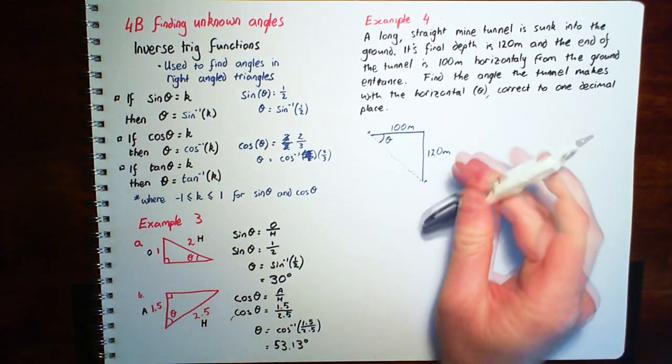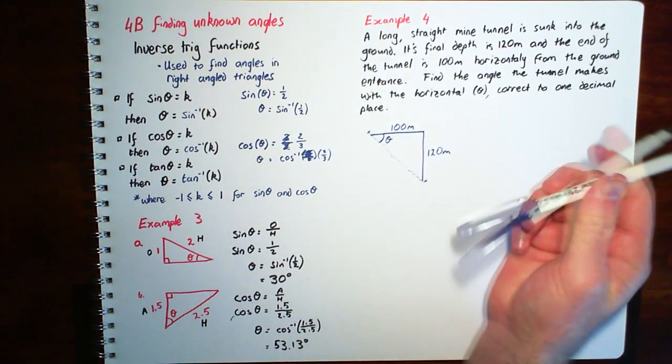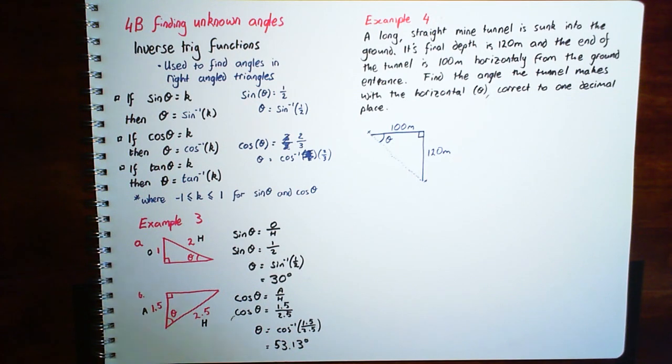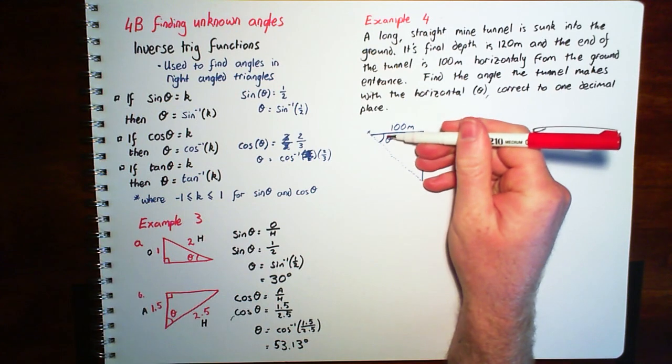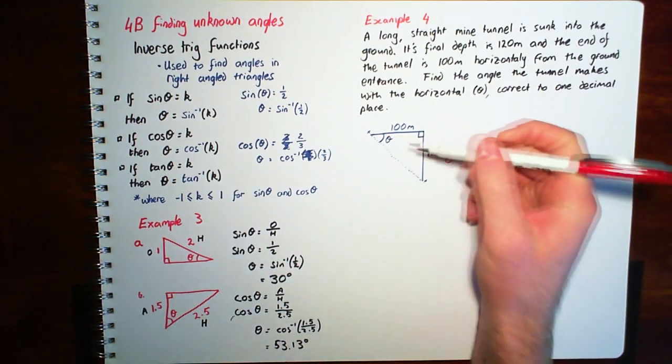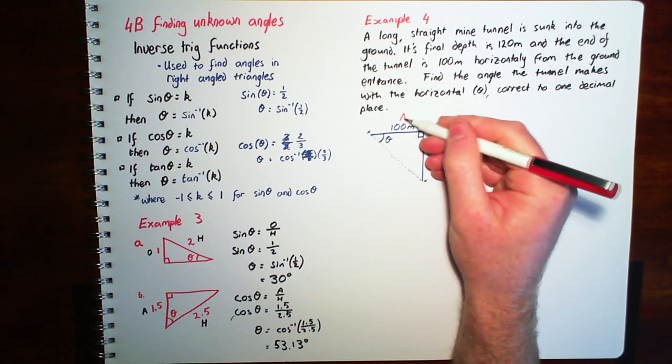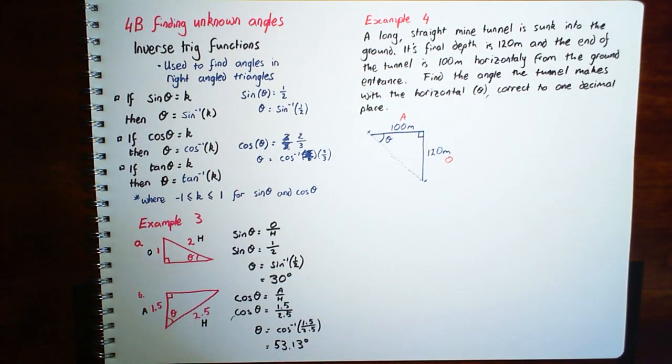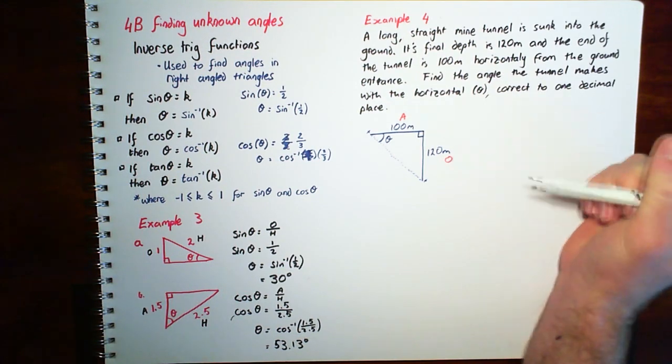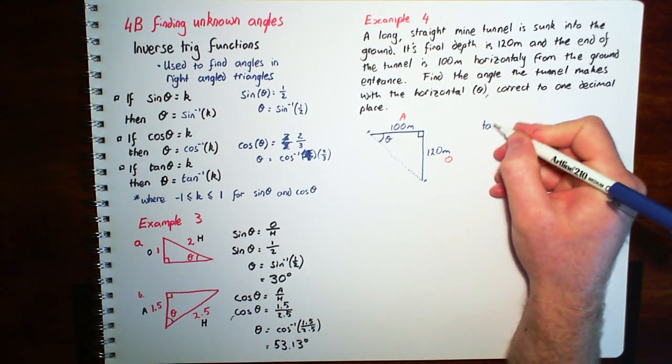Now we have a right angle triangle which we'll be able to use our trig ratios. So with our trig ratios first step is to label. So from theta we've got an opposite side of 120. Adjacent to that is 100. So we're looking for a trig ratio with O and A in it. So we're looking for tan.